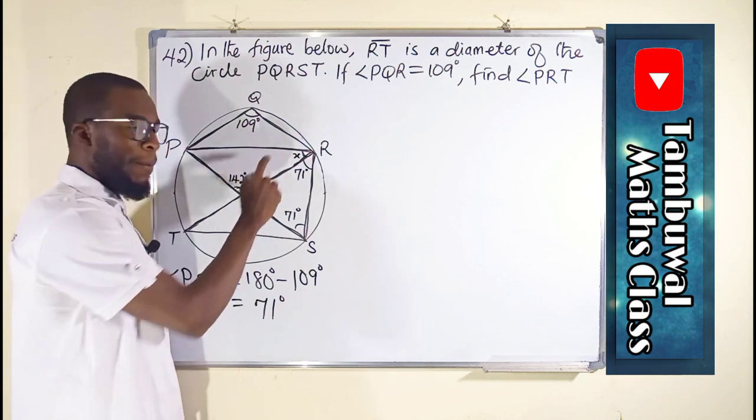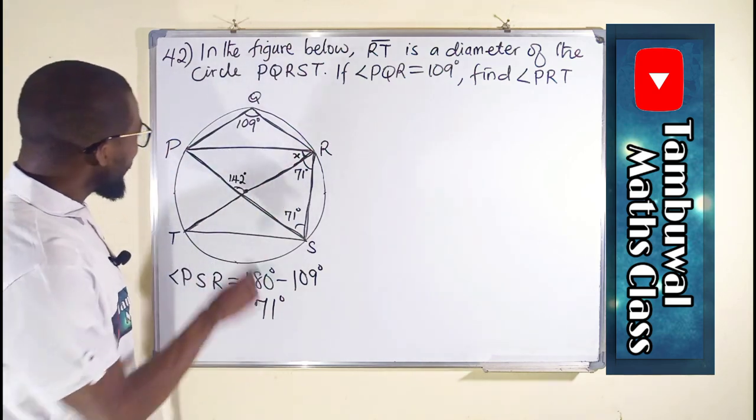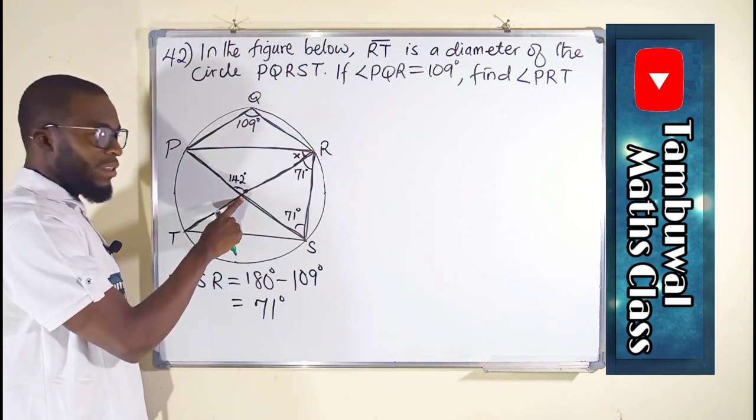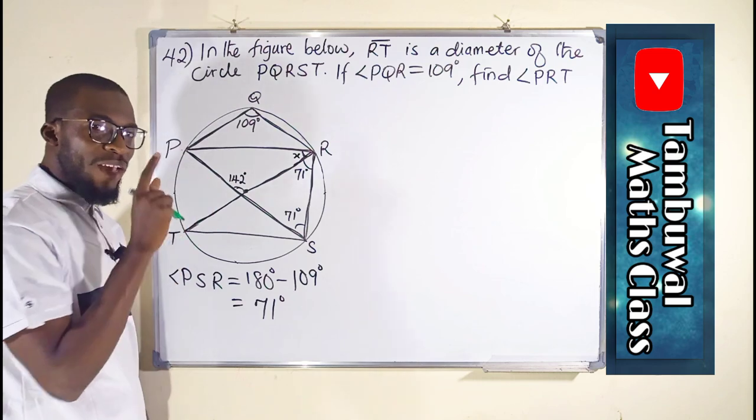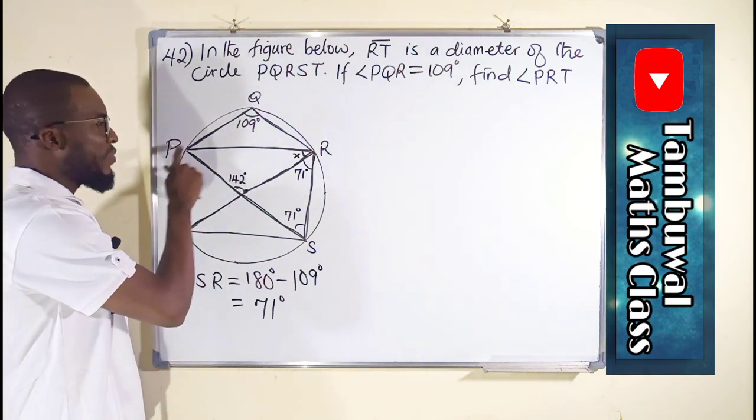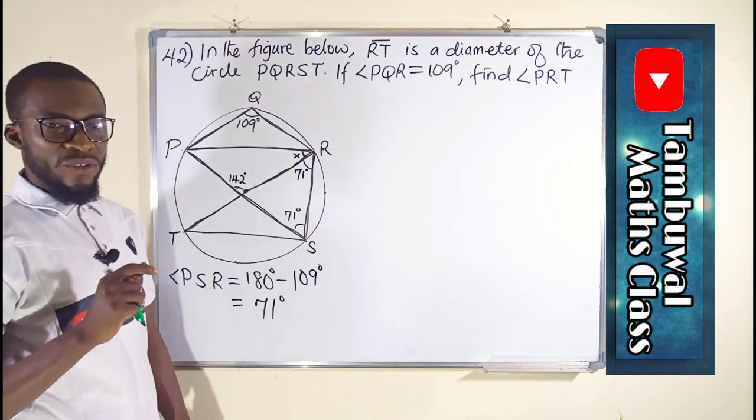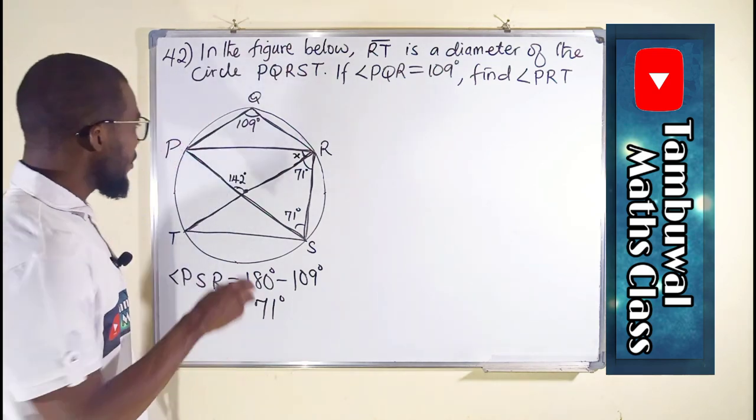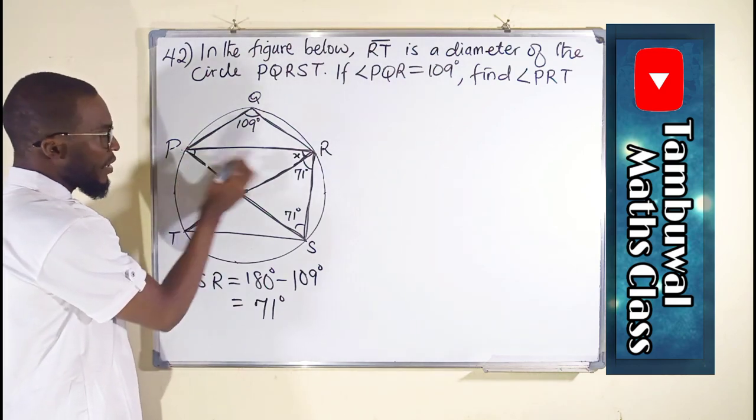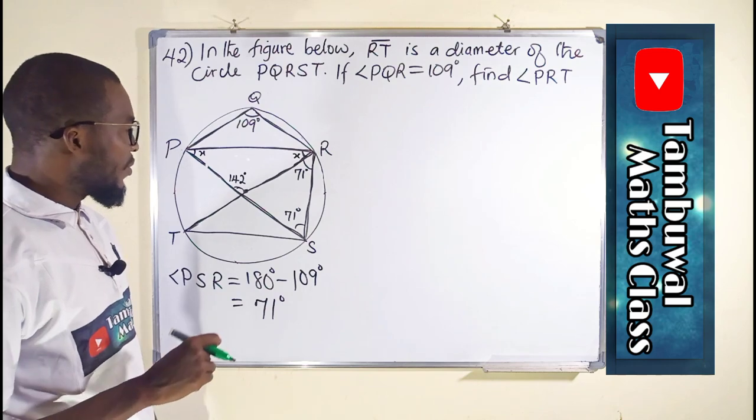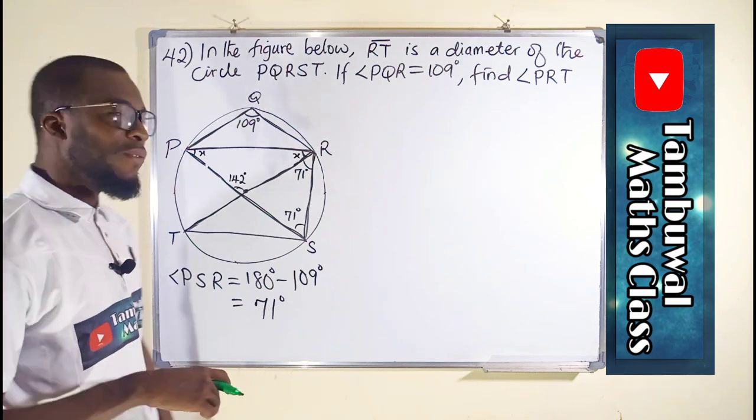Our main target is here. And this is a chord, PR, forming an angle to the center. Remember, it is an isosceles triangle. This is an isosceles triangle, PRO. If it is an isosceles triangle, the base angles are the same. And if this is X, this will definitely be X. So we are now free to find the value of X.